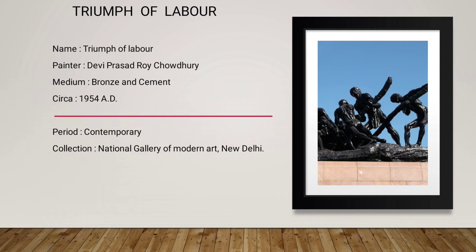So for any painting or sculpture, we will write this box, then show the description. In the description, this idol was made of bronze and cement by Deviprasad Roy Chaudhuri. In this idol, there are four human figures. They are trying to remove a wooden staff from a huge rock, and they are successful. The muscle pressure, the falling of muscle, the contraction and extension movement, are shown beautifully in this sculpture.